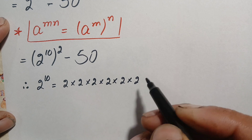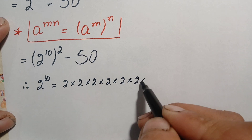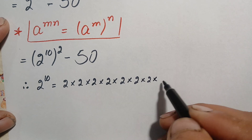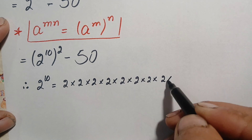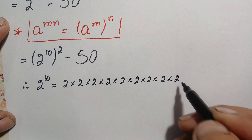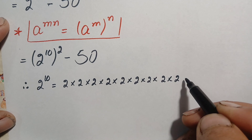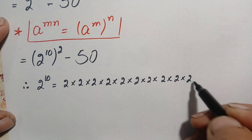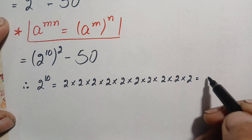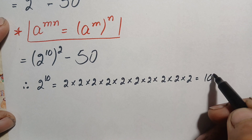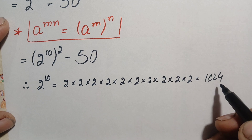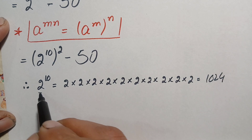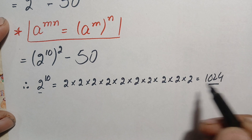Continuing: 32 times 2 is 64, 64 times 2 is 128, 128 times 2 is 256, 256 times 2 is 512, 512 times 2 is 1024. So the value of 2 raised to power 10 is 1024.